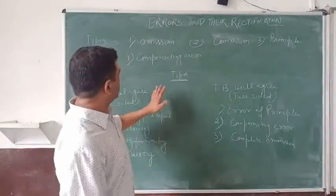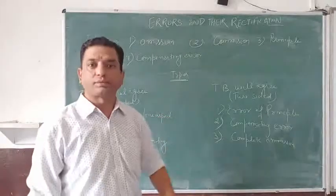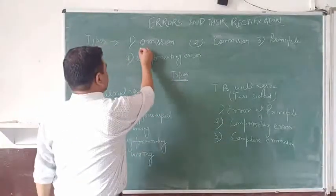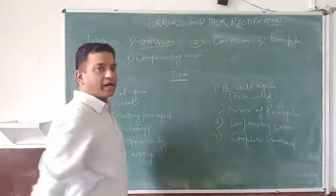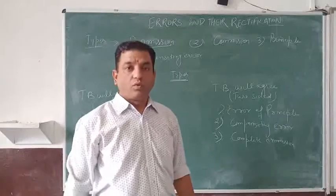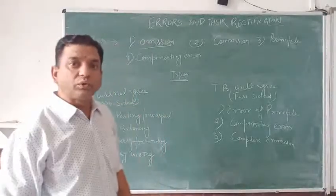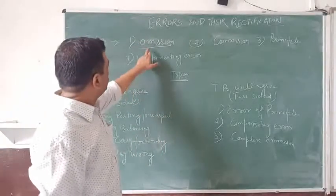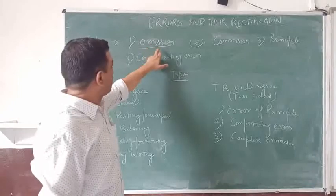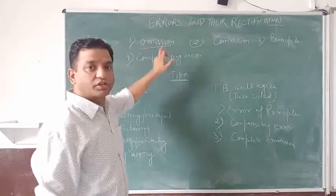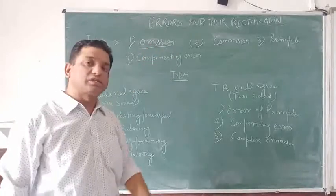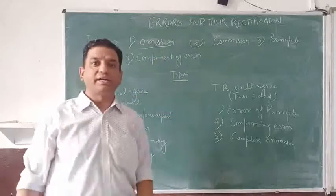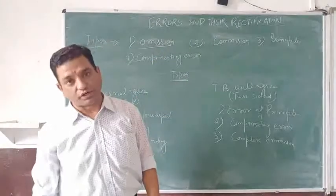We will discuss what are the different types of errors. The very first error is the error of omission. When you omit to record something, when you forget to record something, it is called an error of omission. It is of two types: one is partial omission and the second is complete omission.